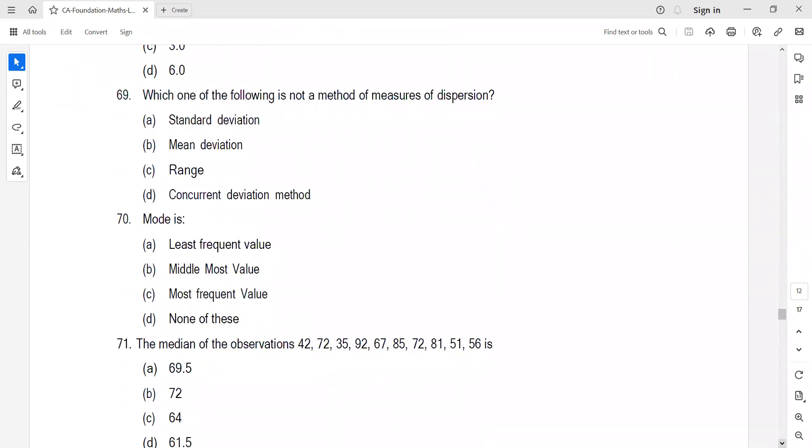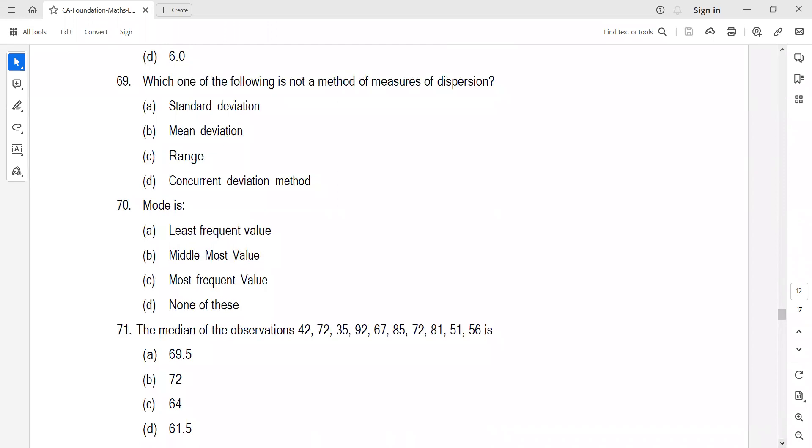Which one is not a method of dispersion? Standard deviation, mean deviation, and range are all measures of dispersion. Regression is not. The correct answer is D.